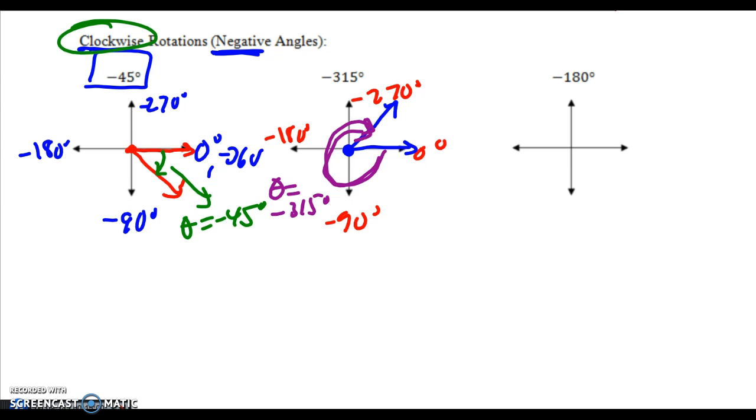Negative 180 degrees. Here is my vertex, here is my initial side. We are going to be going from the x-axis, past the negative 90, and landing directly on negative 180 degrees, which means that my angle would start here and land here. We'd have kind of a straight line, and our angle is negative 180 degrees clockwise.